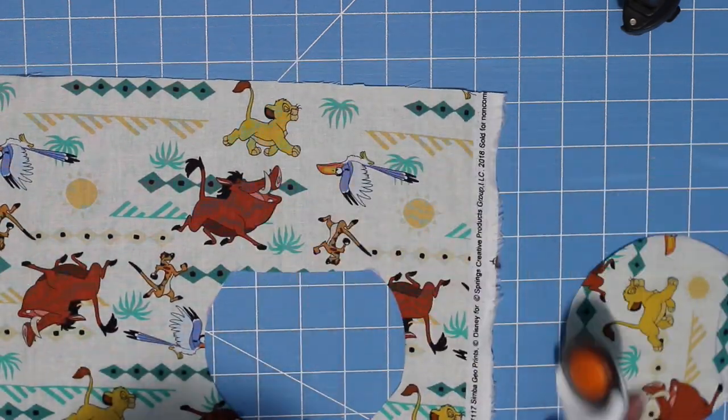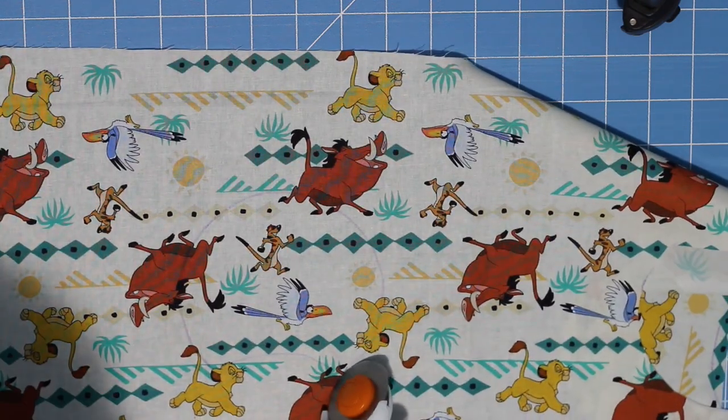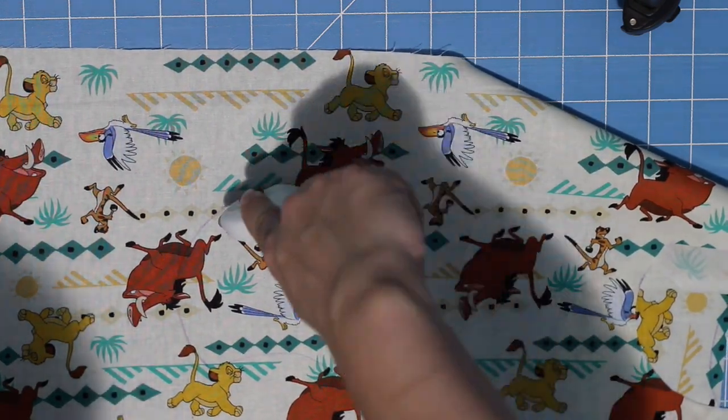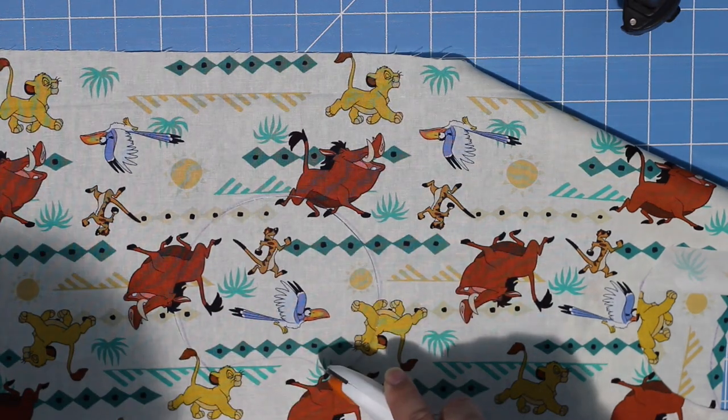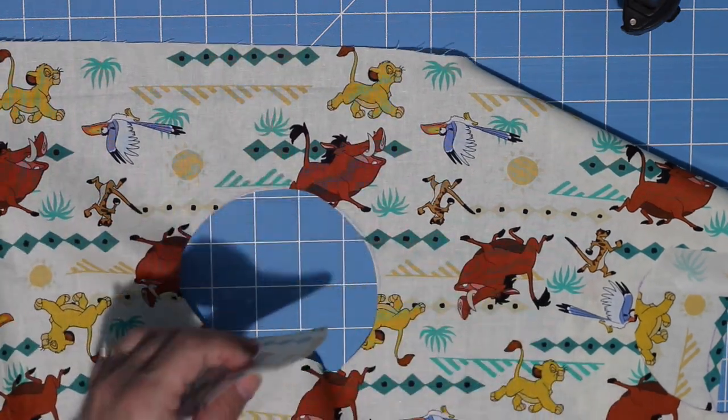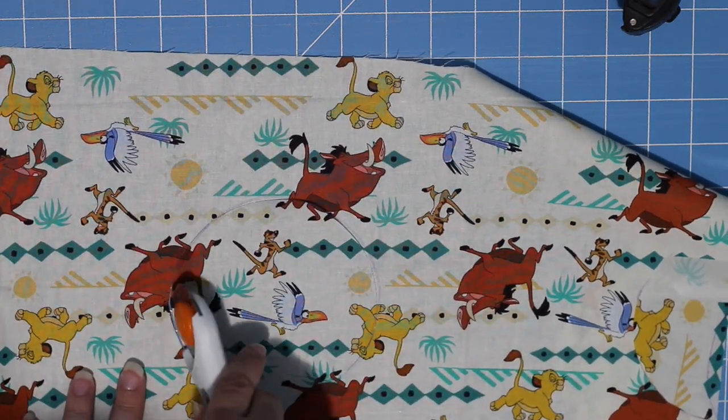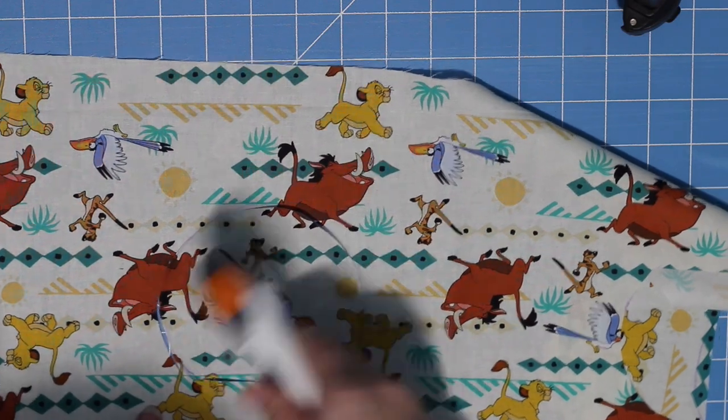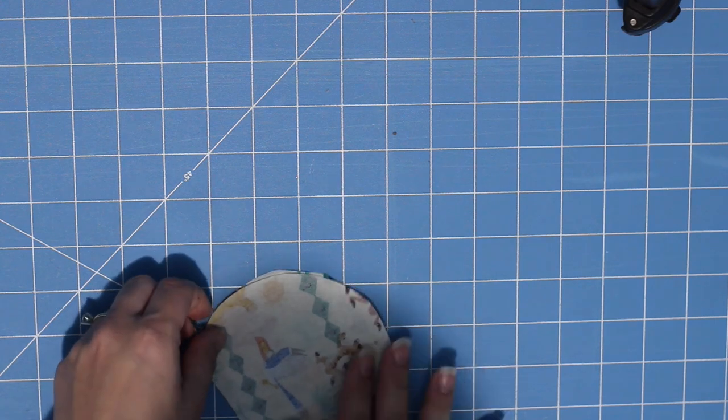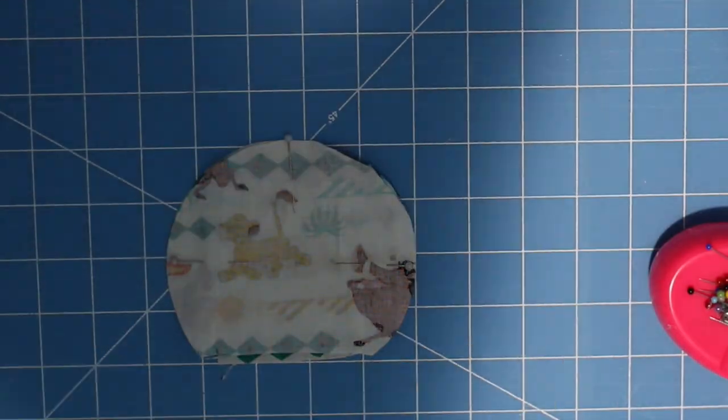But if you have scissors, just go slow to make sure that your lines are nice and crisp, and go ahead and cut out the ears. You will need to trace a total of four of these patterns, two per ear, and make sure that you are using the ear cutting line template.